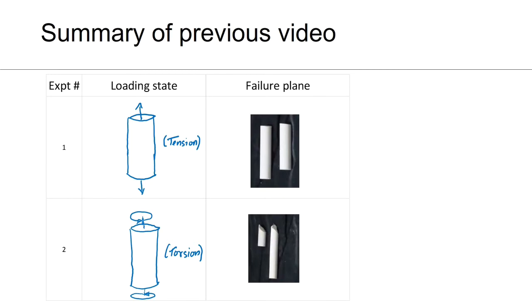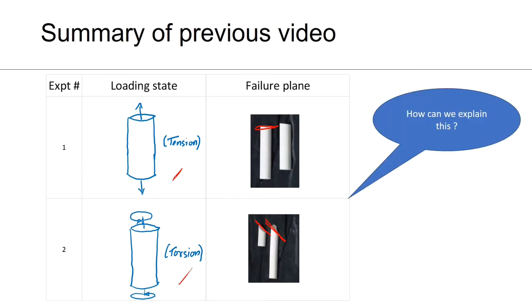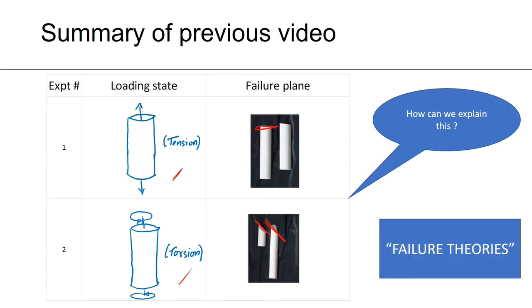We performed two experiments. In the first experiment, I broke a chalk piece in tension and we observed that the failure plane was perpendicular to the loading axis. In the second experiment, I broke the chalk in torsion and we observed that the failure plane was inclined at 45 degrees to the loading axis. The question I left was: how can you explain this? The short answer is using failure theories, but we need to understand other concepts in fair detail to approach this.